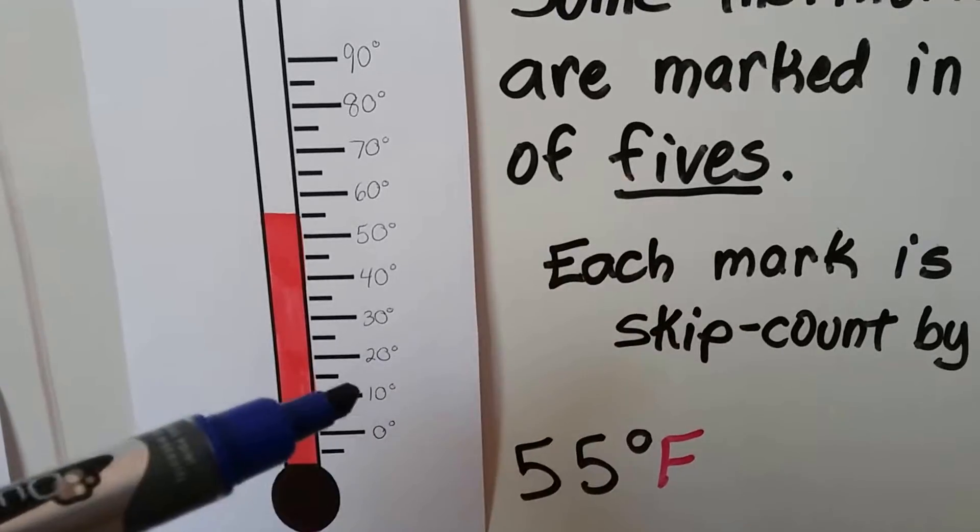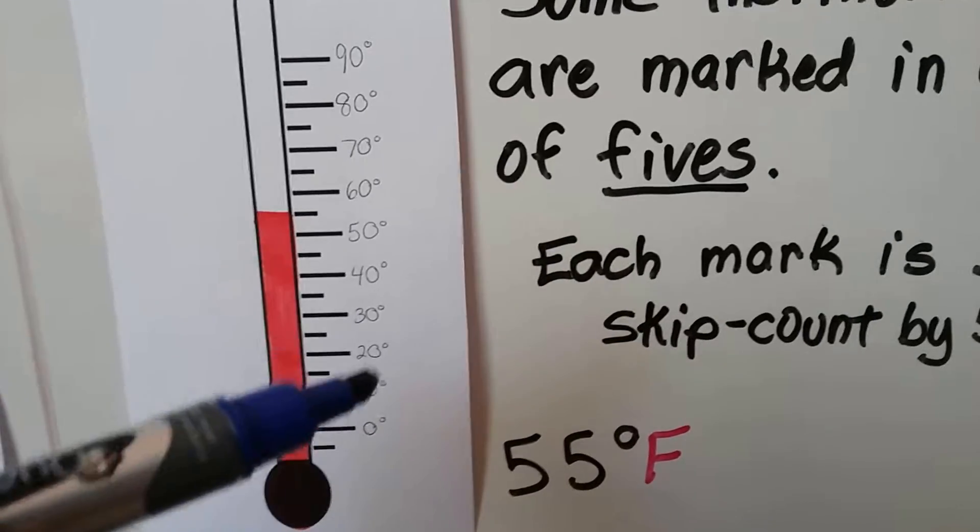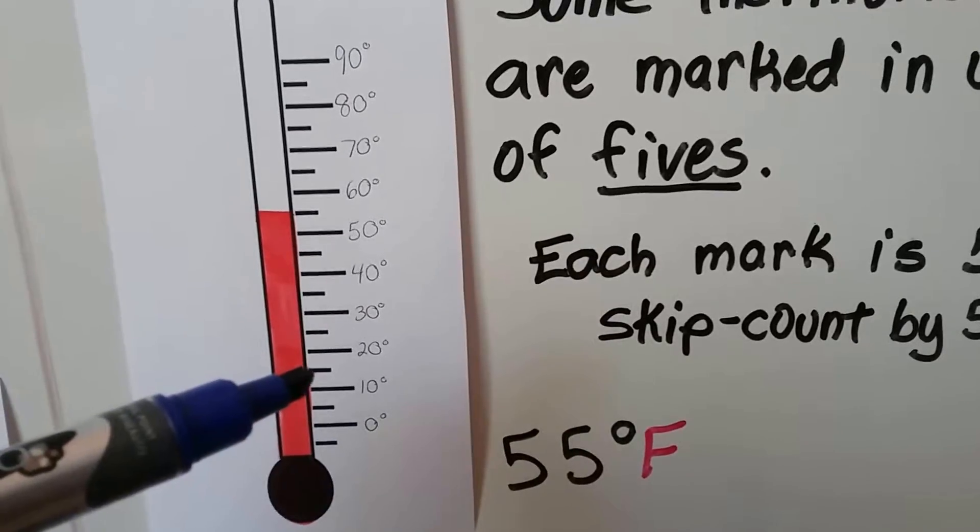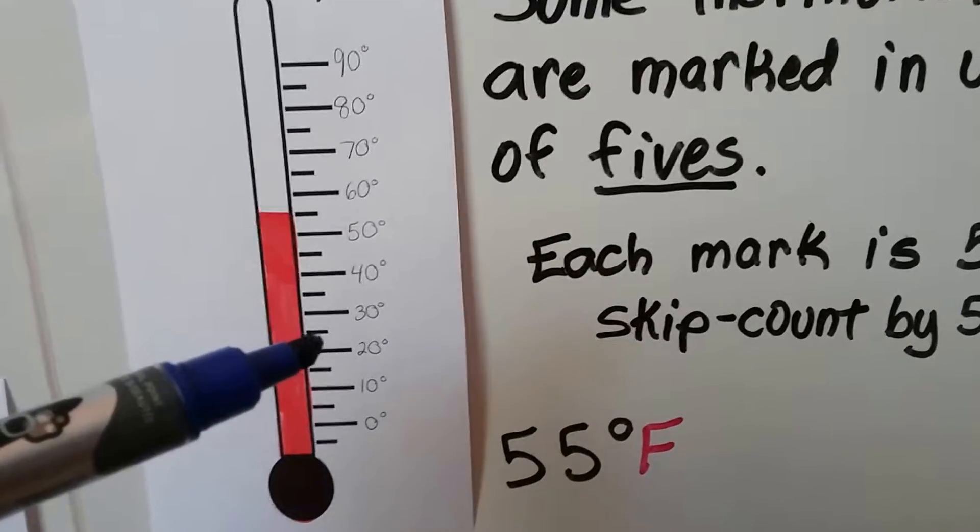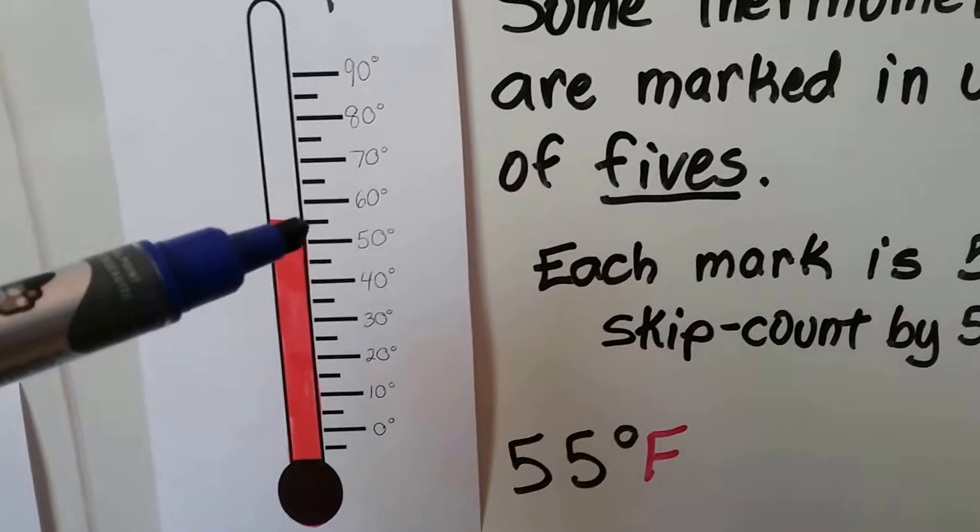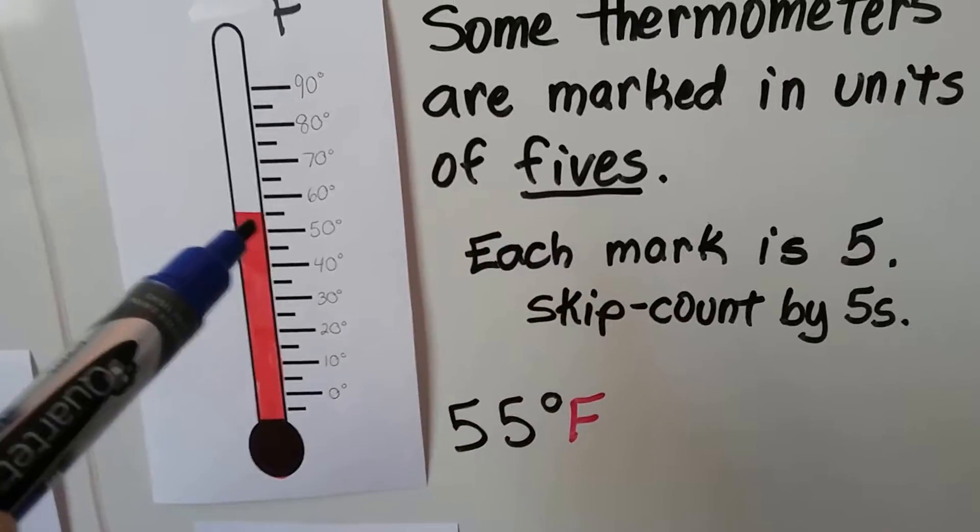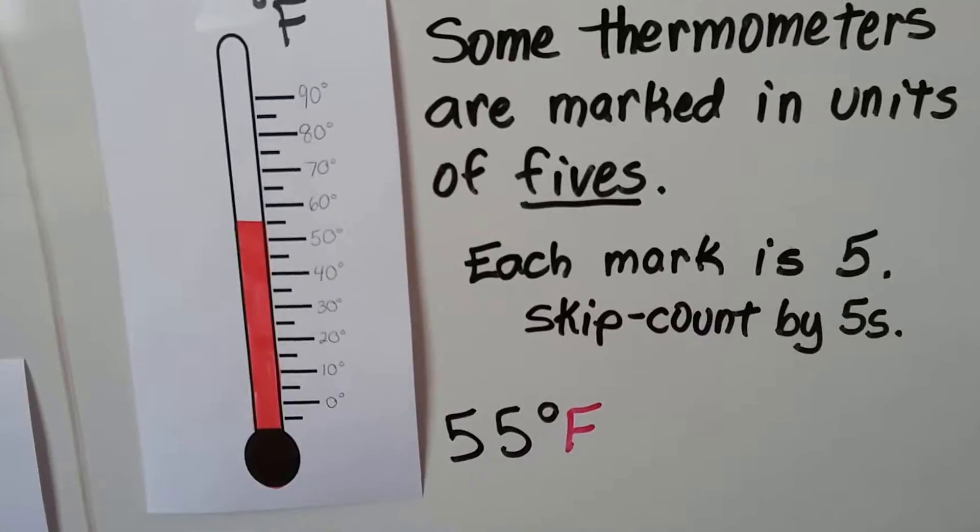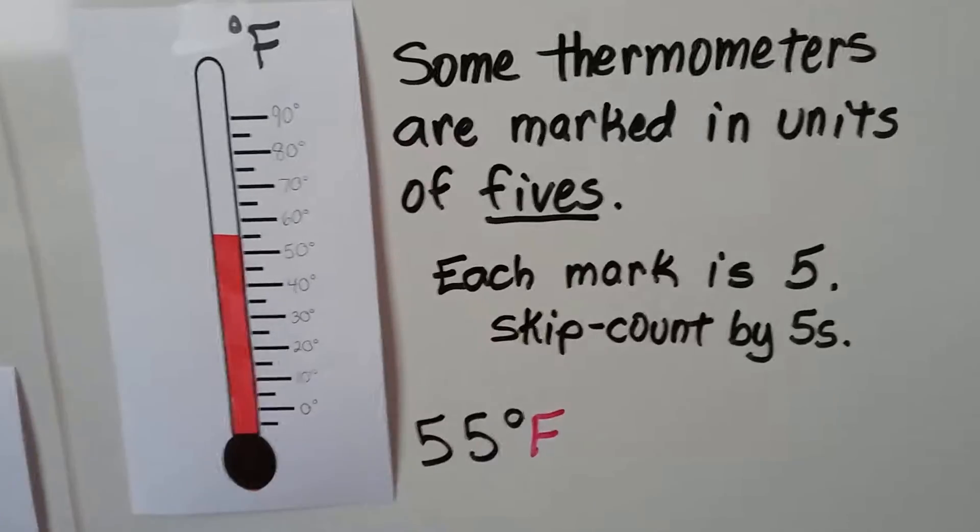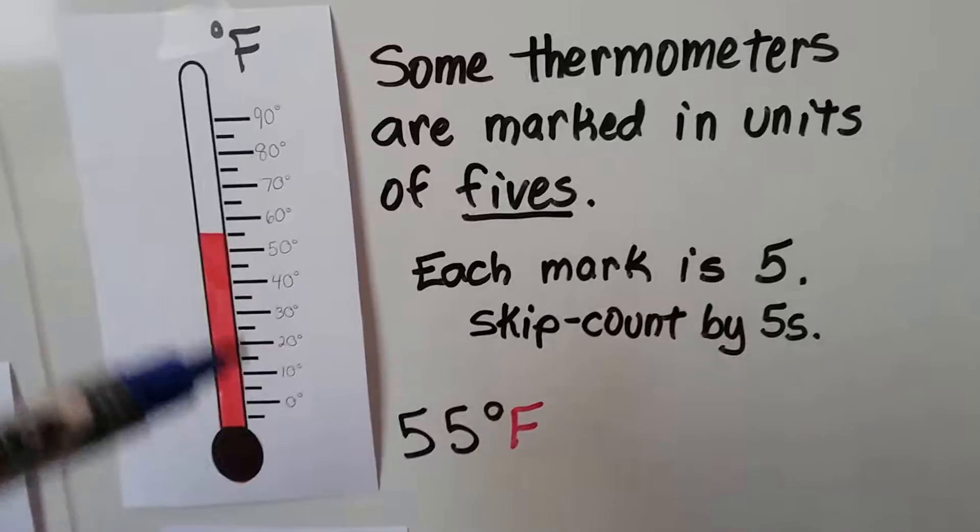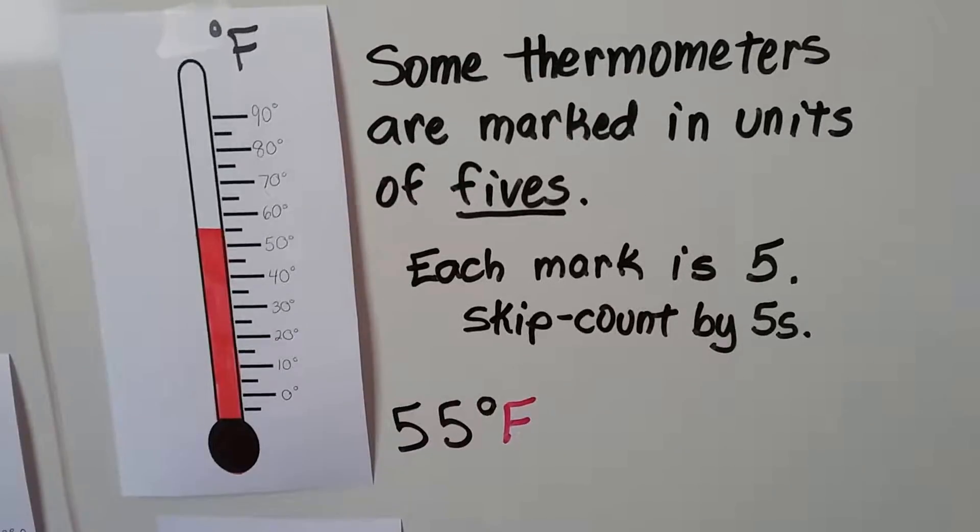Well, in between each one would be a 5. So 10 and 5 would be 15, then 20, then 25, then 30, 35, 40, 45, 50, 55. So this one is in between 50 and 60 degrees Fahrenheit. This would be 55 degrees Fahrenheit. Each mark is a 5. See? And it skip counts by fives.